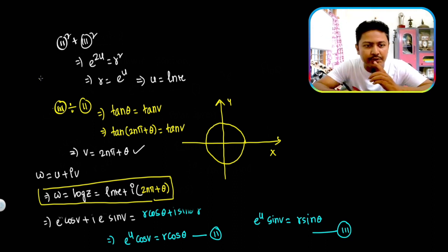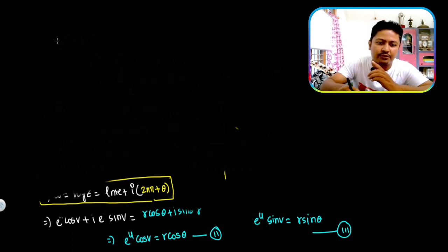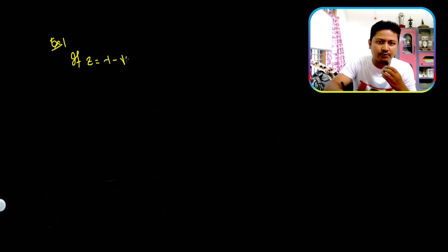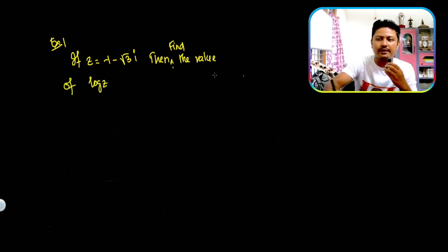Now I will use an example. Example 1: if z equals minus 1 minus square root of 3 times iota, then find the value of log z. Let's proceed to solve it.